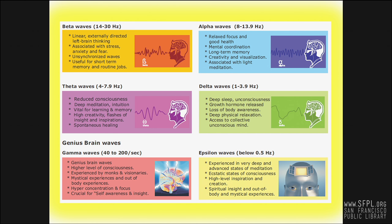These are the most common brainwave bands. There are five basic brainwave oscillation patterns I will be focusing on today: gamma, beta, alpha, theta, and delta.